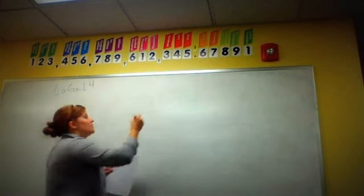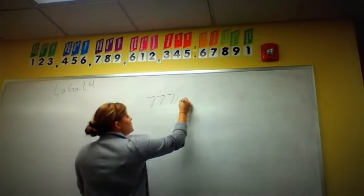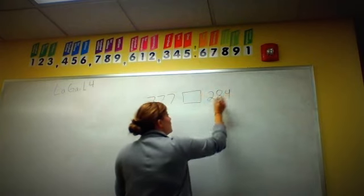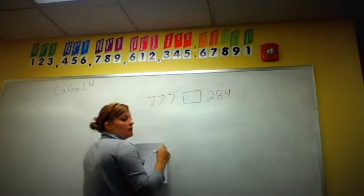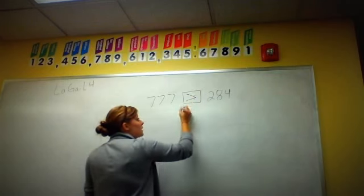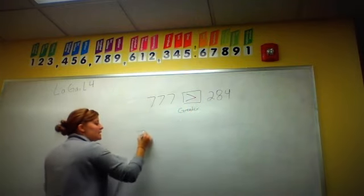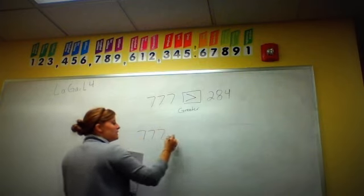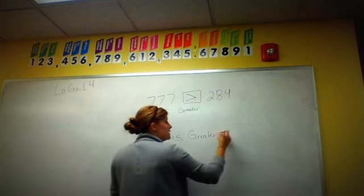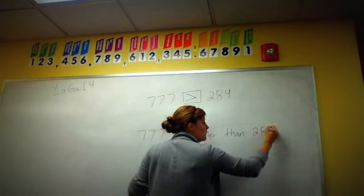The first number counts for everything. So if I'm reading it, if I'm going to do 777, so 777, 284, which one's bigger? 777. Yes, right? So that would be greater. This is read as 777 is greater. If you need to write this sentence out, do it. That would be greater than 284.